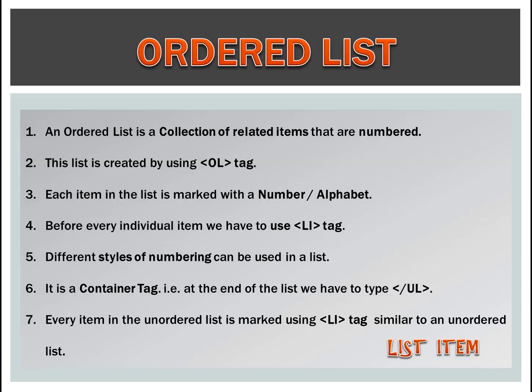Let's start with ordered list. An ordered list is a collection of related items that are numbered. This list is created by using the ol tag. Each item in the list is marked with a number or alphabet. Before every individual item we have to use the li tag. Different styles of numbering can be used in a list. It is a container tag.